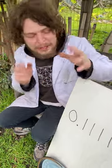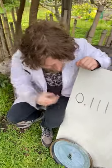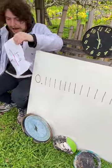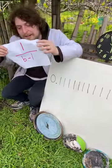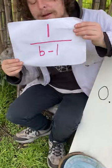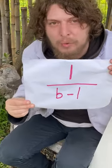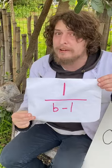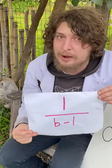Because we should really see this string of digits as the fraction one divided by b minus one, where b is whatever base you're counting in.